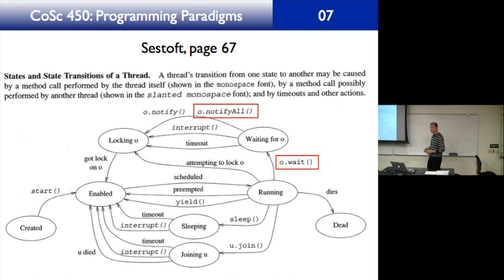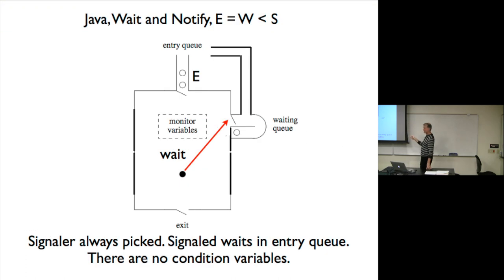Let's go back to Sestoft now. I want you to see that the picture from Sestoft is precisely this figure — E equals W less than S — and this is the mechanism that happens whenever you do a wait or whenever you signal.